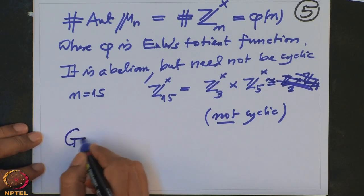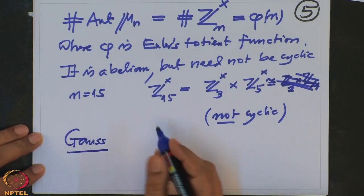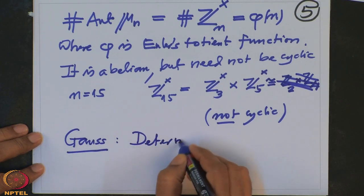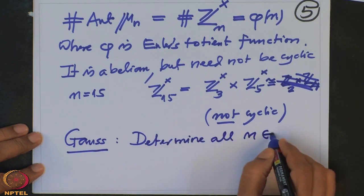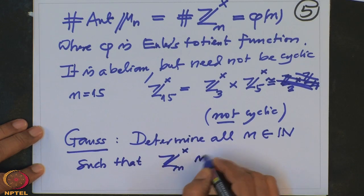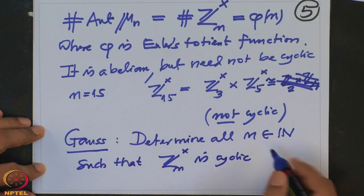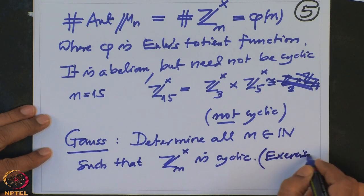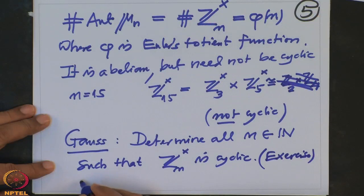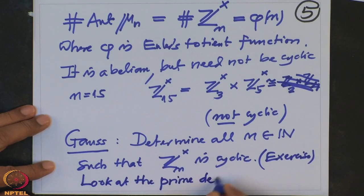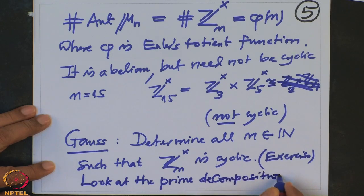Gauss has answered exactly for which n the group (ℤ/nℤ)× is cyclic — there is a nice answer involving the prime decomposition of n. I will leave this as an exercise. Look at the prime decomposition of n.